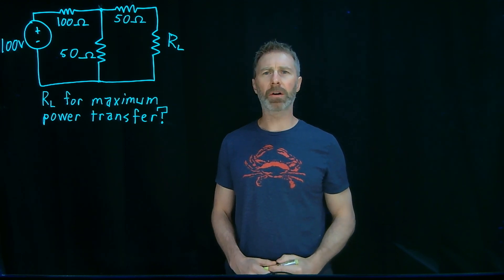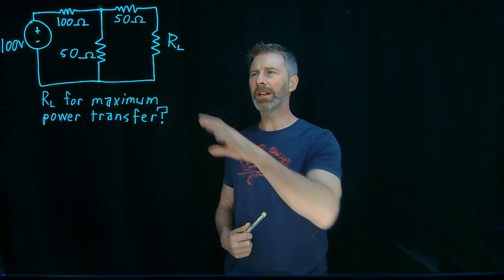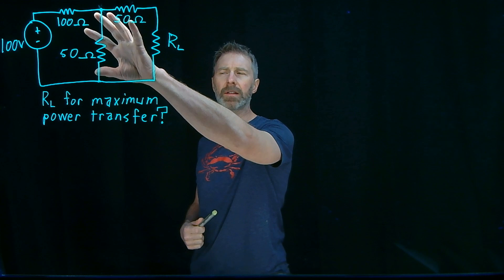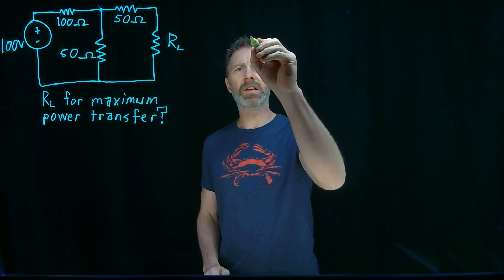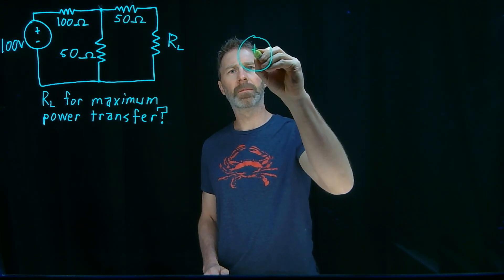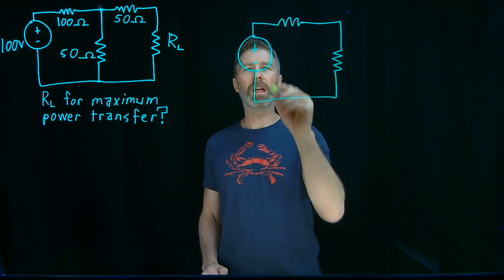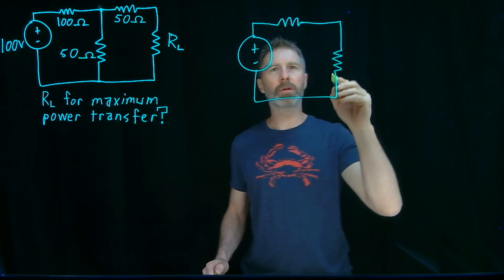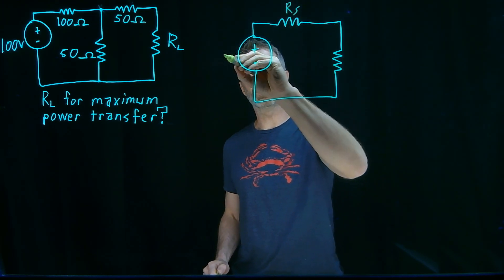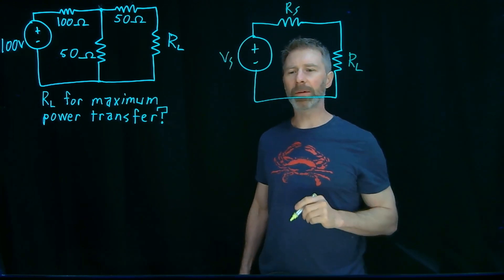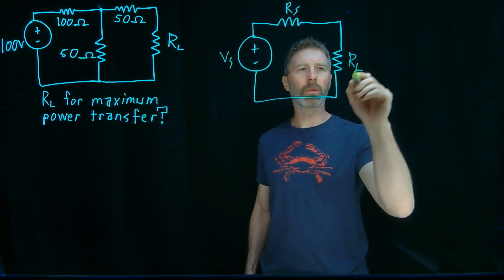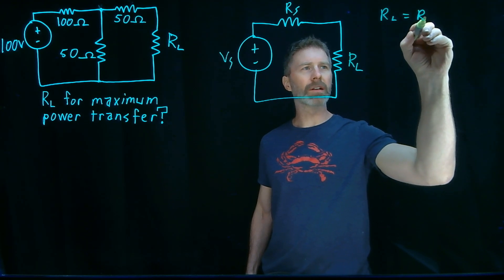Now, if you go back to the maximum power transfer theorem, it doesn't say how you deal with a circuit like this. All it says is if you have a voltage source with an output resistance, so let's call that VS and RS, then you'll have the maximum power transferred to the load when RL is equal to RS.